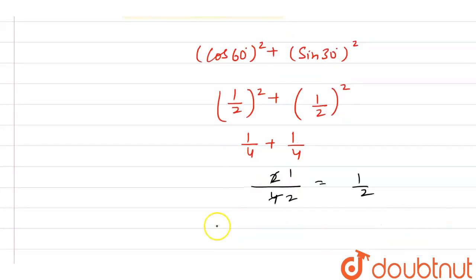So we can write that here, as the question says to find cos square of 60 degree plus sine square of 30 degree, we can write this equals to 1 by 2, and this is our final answer. Thank you.